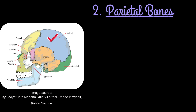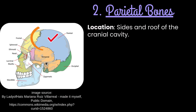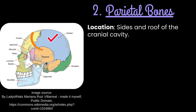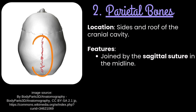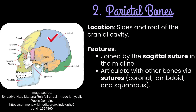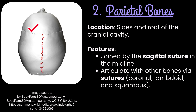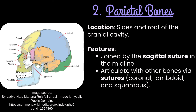Number 2: Parietal bones. They form the sides and roof of the cranial cavity. They are joined by the sagittal suture in the midline, and articulate with other bones through sutures: the coronal suture, lambdoid suture, and squamous suture.